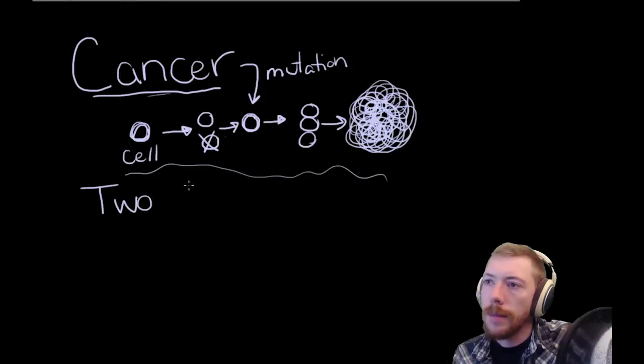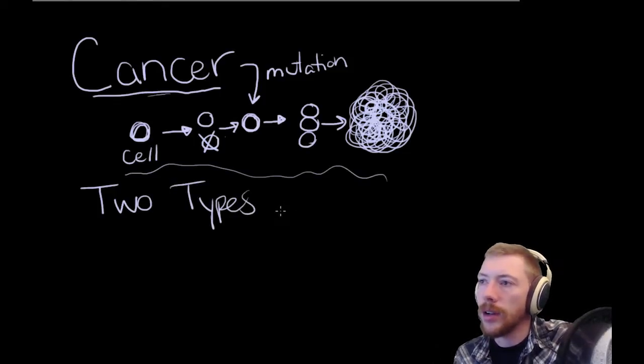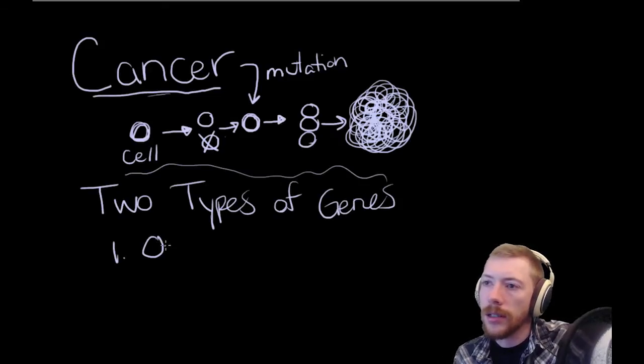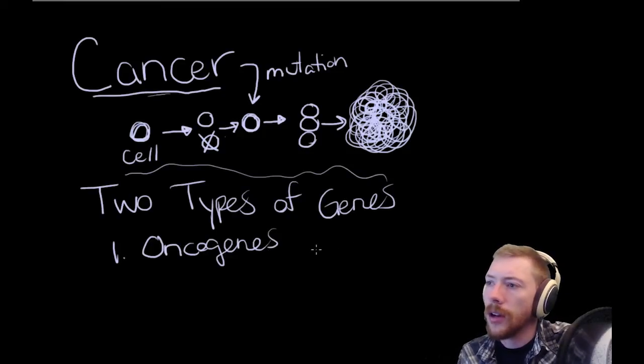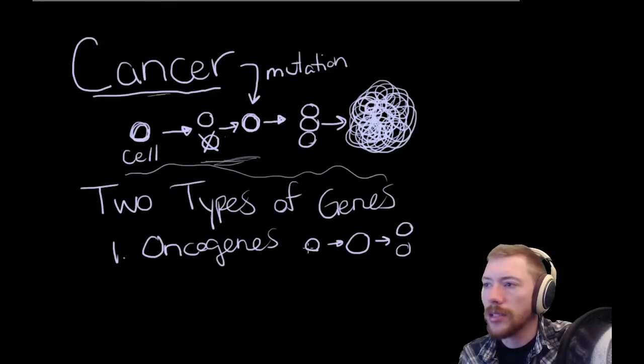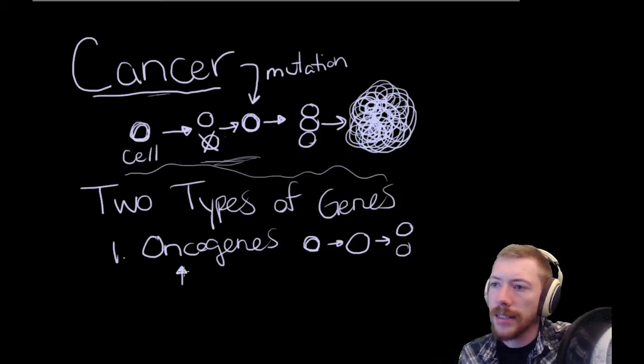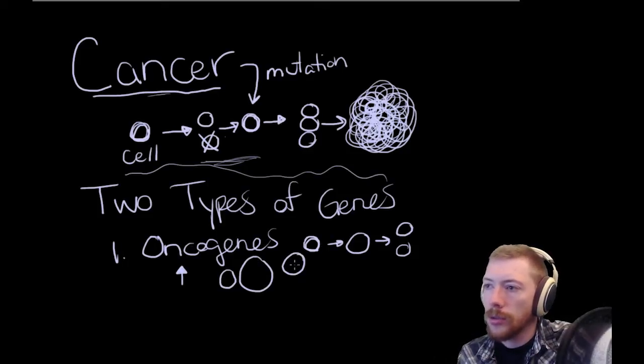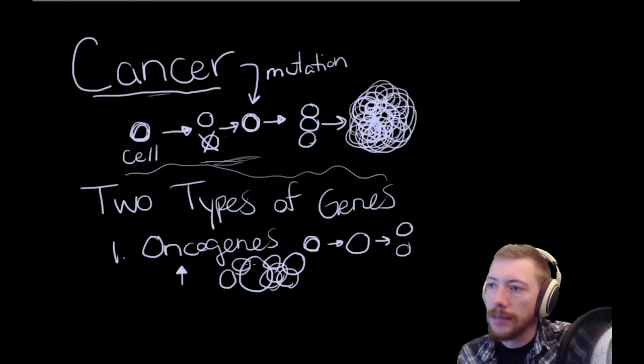There are two major types of genes that are involved in cancer. The first are oncogenes. Oncogenes are involved in normal cell growth and proliferation. This is a natural process. These genes are not inherently bad. But what happens is if you have a mutation that involves one of these oncogenes, you can imagine that if you were to increase the activity of the oncogenes, then that would lead to too much cell growth, too much cell activity. And that can be a real problem.